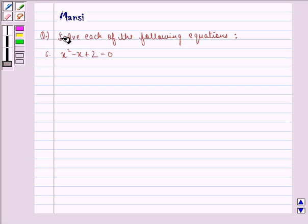Now in this question we have to solve the equation x squared minus x plus 2 equal to 0. Now before starting with the solution, we see the key idea behind the question.